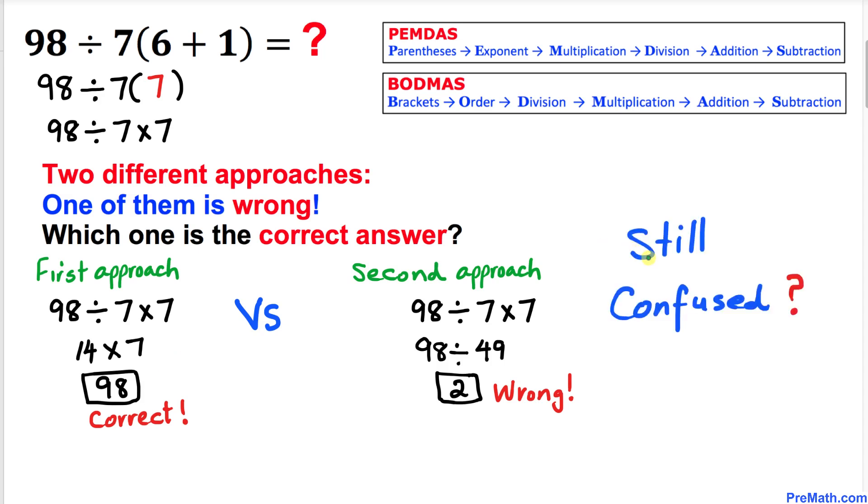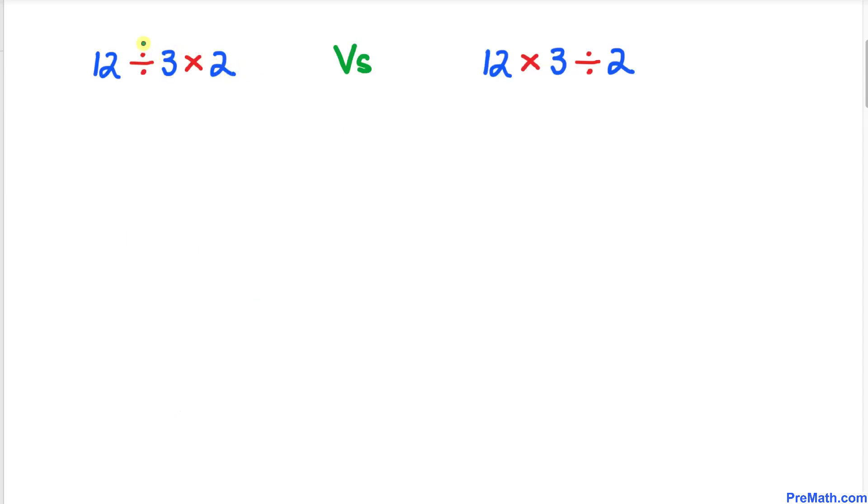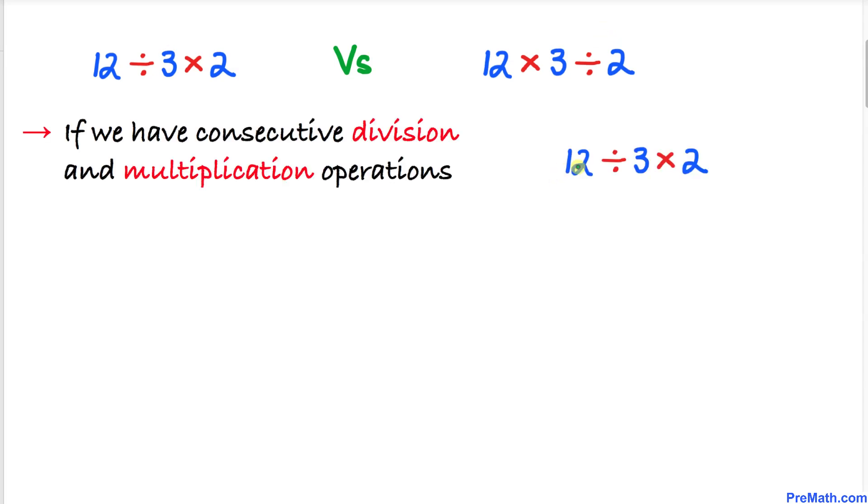Still confused? Let me go ahead and give you one more example. Here we got a scenario where we have division first and multiplication second. And in this scenario we have multiplication first and division second. Let's take care of this first scenario pretty quick. Here we can see that division is coming first and then multiplication.